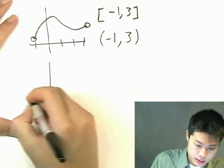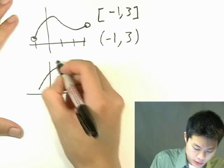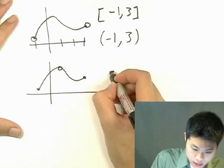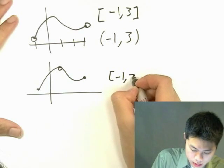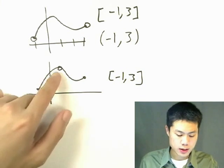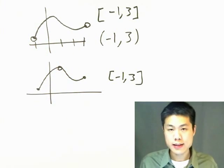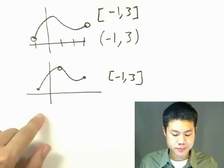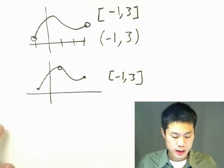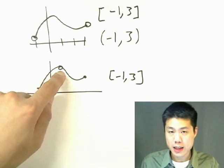If I were to give you this next graph — this is an open circle here, so this point is not included in the domain; the function is not defined at this point — then yes, there is an absolute minimum, but there is no absolute maximum.